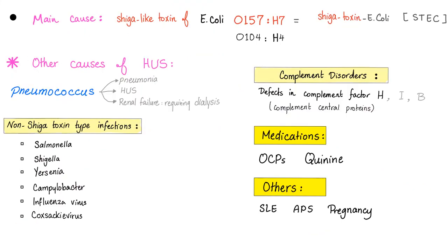HUS main cause: shiga-like toxin of E. coli O157:H7, which we call Shiga toxin-producing E. coli or STEC. Another E. coli strain is O104:H4. Other causes include pneumococcus — a child with pneumonia developing HUS and renal failure requiring dialysis is particularly severe. Non-shiga toxin infections: Salmonella, Shigella (note: Shigella produces Shiga toxin, not shiga-like toxin — big difference). Other causes include complement disorders affecting complement factor H, I, or B; medications such as oral contraceptives or quinine; lupus, antiphospholipid antibody syndrome (APS), and pregnancy. Influenza virus can also lead to HUS.